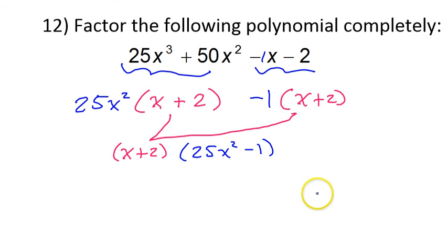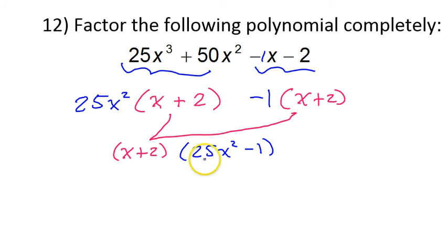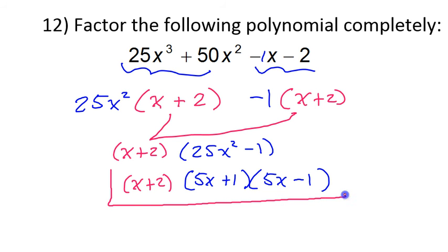Then it's just a matter of knowing not to stop here because 25x squared minus 1 is the difference of two squares. It is further factorable. So I must keep going and factor this more. 25x squared factors as 5x plus 1 times 5x minus 1. And of course, we will just bring down the x plus 2. So this is now factored completely. And I did it by grouping.